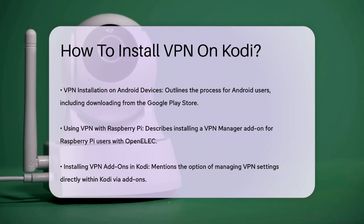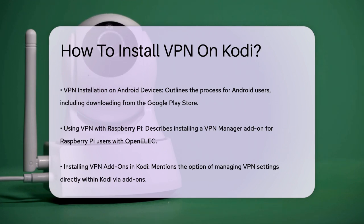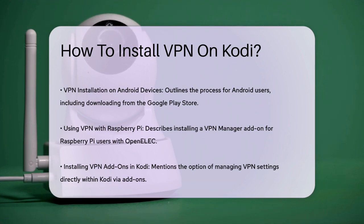Another option is to install a VPN as an add-on directly within Kodi. This method is a bit more complex and not all VPN services support it, but it allows you to manage your VPN settings without leaving Kodi. You'll need to download the OpenVPN installer and the VPN Manager for OpenVPN add-on. Run the installer, then in Kodi, locate the add-on, install it, and enter your VPN login details to complete the setup.